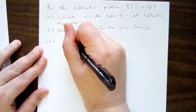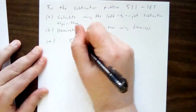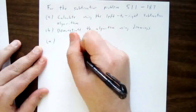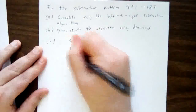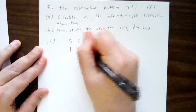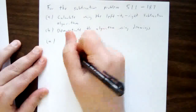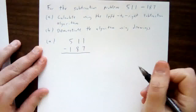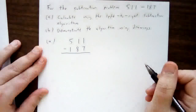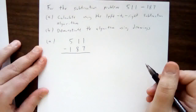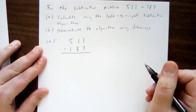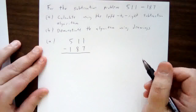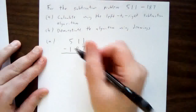To subtract 187 from 511 using left-to-right subtraction, I begin by stacking our numbers by place value — 1's on top of 1's, 10's on top of 10's, and so on. And we'll work our way from left to right.